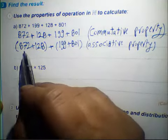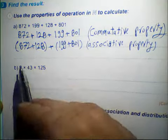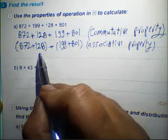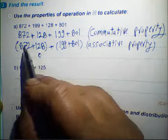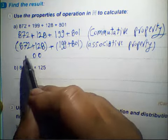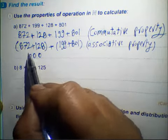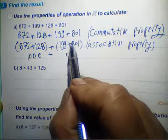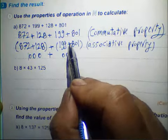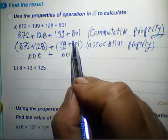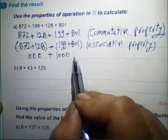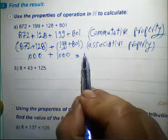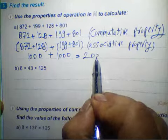Then 872 plus 128: 8 plus 2 equals 10, 3 plus 7 equals 10, 2 plus 8 equals 10, giving 1000. And 199 plus 801 also equals 1000. So 1000 plus 1000 equals 2000.